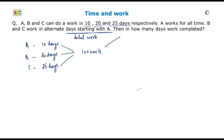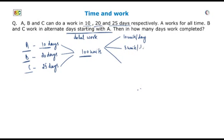Now we can find the one day work of A, B and C. A can do 100 divided by 10, that is 10 units per day. B can do 100 divided by 20, that is 5 units per day. And C can do 100 divided by 25, that is 4 units per day.